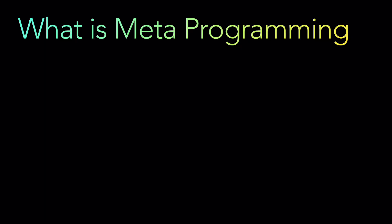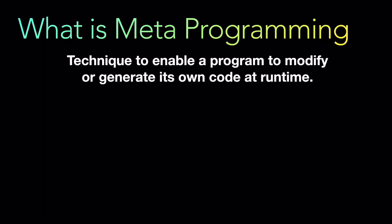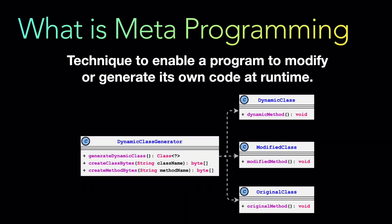So what is metaprogramming? Metaprogramming is basically a technique that enables a program to modify or generate its own code at runtime. It enables developers to write code that inspects, modifies, or creates new classes, methods, and other program elements dynamically at runtime. For example, a dynamic class generator is responsible for generating the dynamic class and the method bytecodes — that is how you basically use metaprogramming.